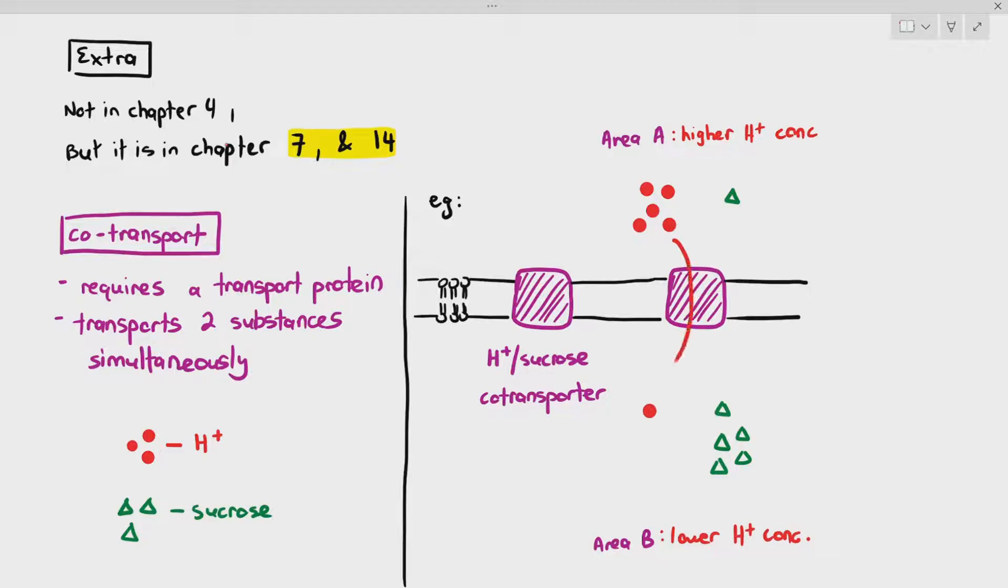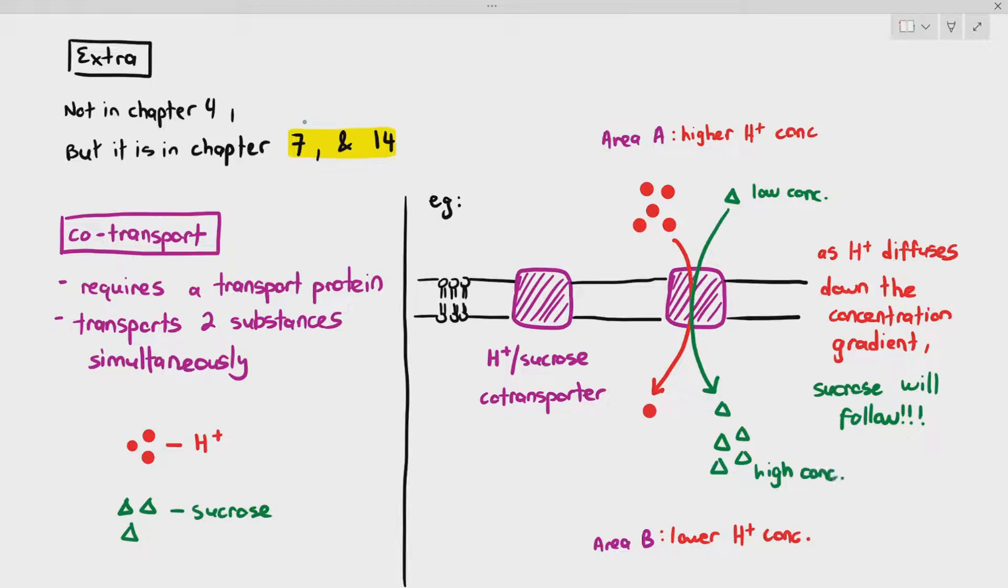What will happen is here, one hydrogen ion will diffuse through the co-transporter. But when it does so, it will automatically pull in the sucrose molecule effortlessly. So, the hydrogen ion that diffuses through will also be accompanied by one sucrose at the same time. So, as hydrogen ion diffuses down the concentration gradient, sucrose will follow.